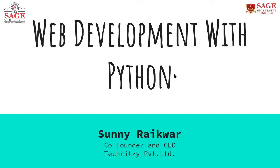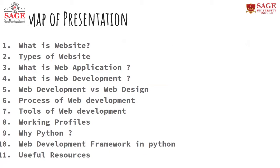Web development with Python. So basically we talked about what's going on in the whole presentation. We talked about the roadmap: first we will know what is a website, what are the different types of websites, then what is a web application, then web development, the differentiation between web development and web designing, the process of web development, the tools, the working profiles, why Python, and some web development frameworks in Python. And finally there will be some useful links.